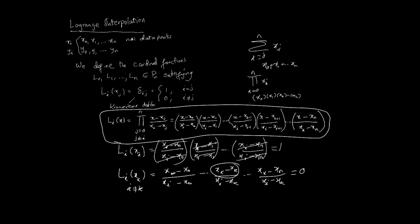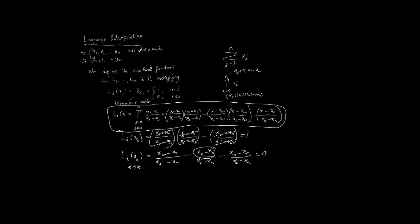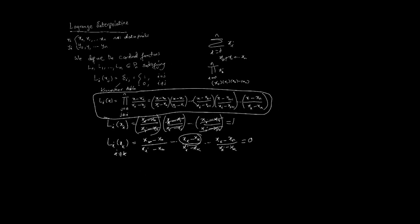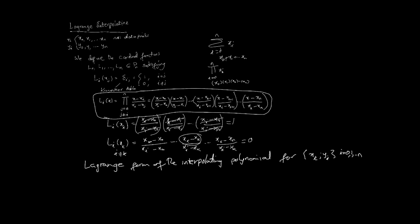The main definition of the Lagrange or cardinal functions is now established. The Lagrange form of the interpolating polynomial for data (xi, yi), i = 0, 1, ..., n — that is, n+1 data points — is: pn(x) = Σ (i=0 to n) li(x) · yi, where yi are the data values. This is the Lagrange polynomial that interpolates the data.